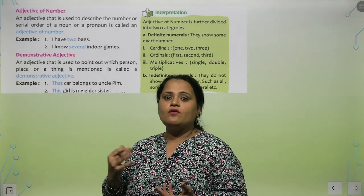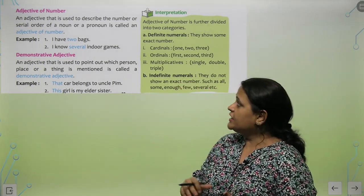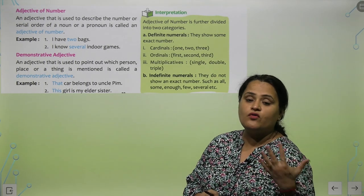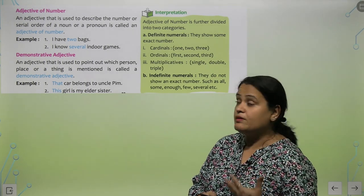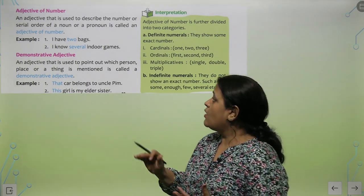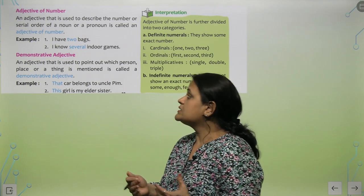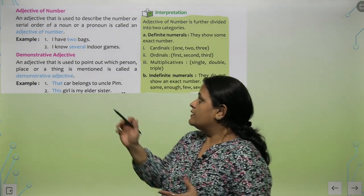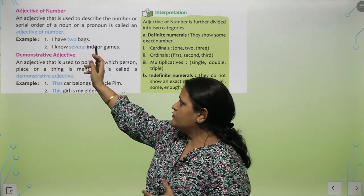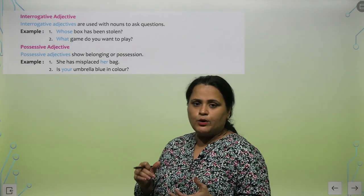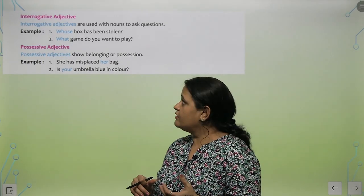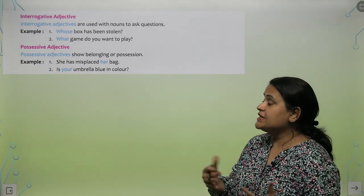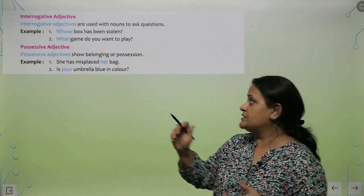Now I am going to tell you about adjective of number. An adjective that is used to describe the number — two, three, four, several, many — and serial order of a noun or a pronoun is called an adjective of number. Example: 'I have two.' Next is interrogative adjective — these are used with nouns to ask questions, yeh noun ke saath use hote hain.